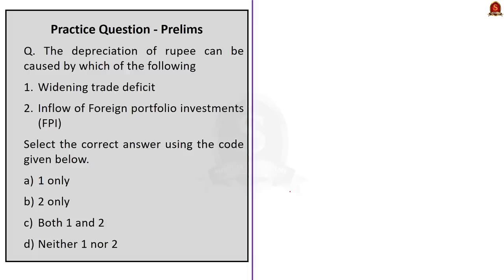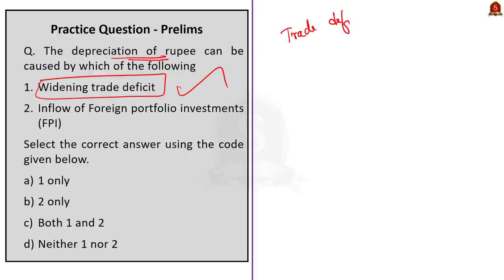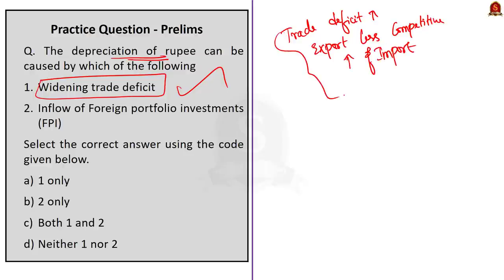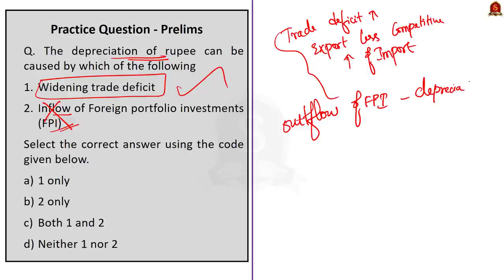Now take the second question — it is regarding the depreciation of rupee, a two-statement type question. First statement says the depreciation of rupee can be caused by widening the trade deficit. Yes, it is correct, because whenever the trade deficit increases, the country's exports become less competitive in the global market and imports increase. Now look at the second statement: the depreciation of rupee can be caused by inflow of foreign portfolio investment. This statement is absolutely incorrect because only the outflowing of foreign portfolio investment can cause currency depreciation — not the inflow, because inflow actually leads to appreciation and not depreciation. The question demands the correct statement, so the answer here will be option A — one only is the correct statement.